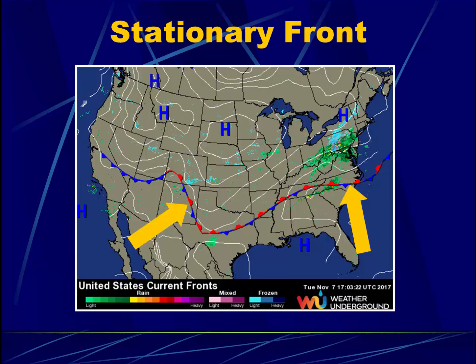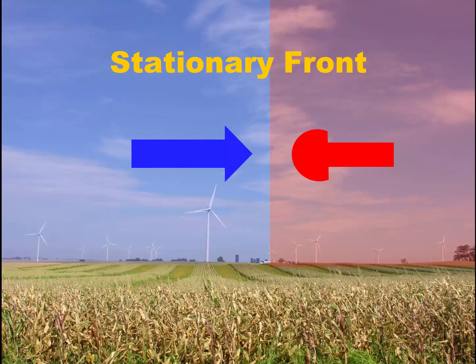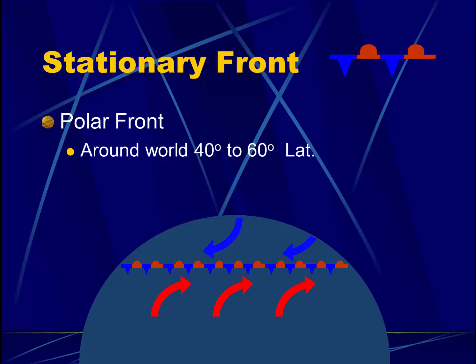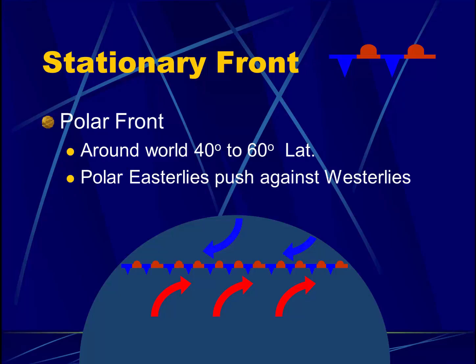Let's look at stationary fronts more specifically. Here's a weather map showing a long stationary front stretching across much of the United States. As you might guess by the name, it is in fact stationary — warm air is on one side, cool air on the other, and neither has more pressure, so the boundary stays stationary. This is sometimes known as the polar front, extending around the world between 40 and 60 degrees latitude. This is the location where the polar easterlies push against the westerlies — where these two different air masses meet is a front, and as long as pressure is similar on both sides it remains stationary.